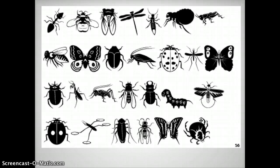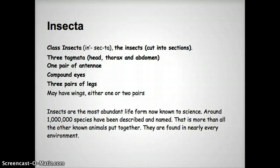Anyway, like I said — short screencast, basic idea. What are insects? Go back to that head, thorax, abdomen, compound eyes, two antennae, six legs. Some of them have wings. That's really the basics of insect characteristics.